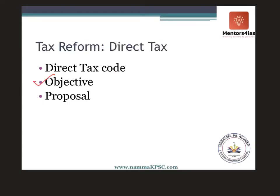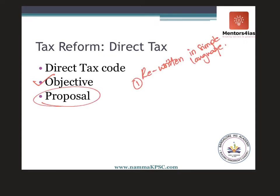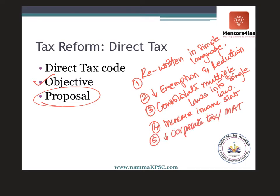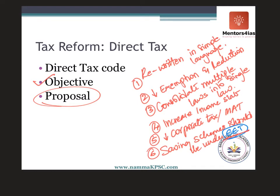Now coming to the proposals of DTC. The first one is rewriting in simple language. Second, reduce the number of exemptions and deductions. Third, consolidate multiple laws into a single law. Fourth, increase the income tax slab. Fifth, reduce the corporate tax and MAT in order to make our companies more competitive in the international market. Sixth, savings schemes should be replaced from EEE — that is exempt, exempt, exempt — to EET — exempt, exempt, tax. And seventh, the introduction of GAR — General Anti-Avoidance Rule.